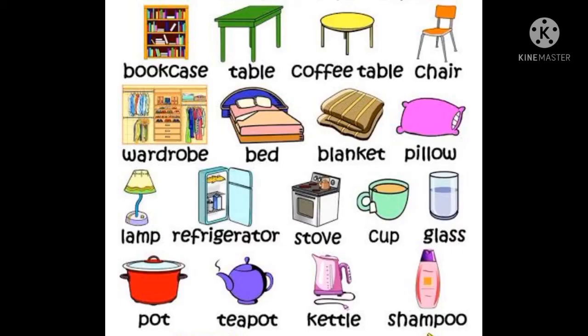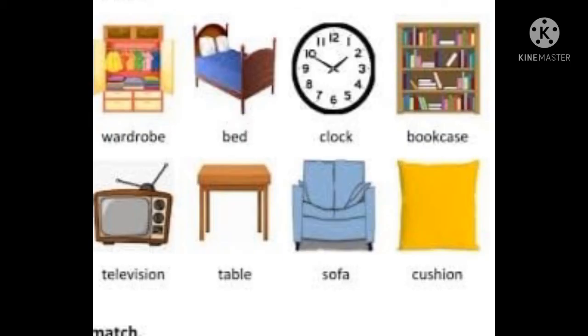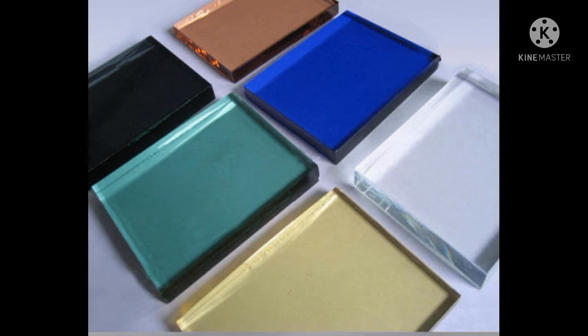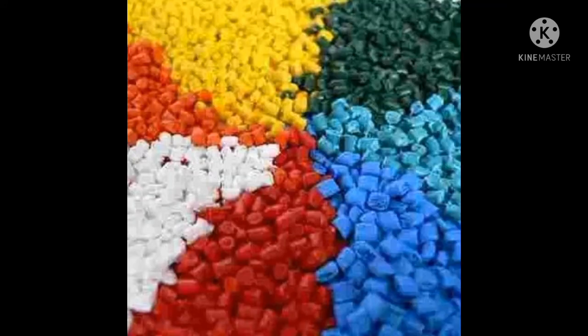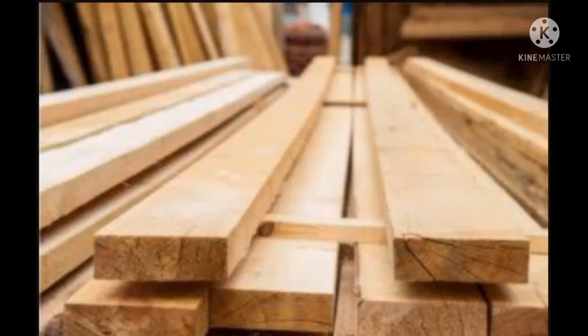Let us see the next topic. There are many objects in our surroundings such as a chair, table, cycles, utensils, clothes, tires, water bottles, stones, etc. They are all made up of different kinds of materials just like glass, plastic, metal, wood, etc. Let us do one more activity here.